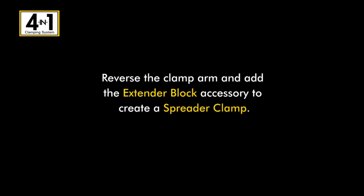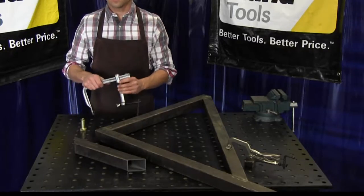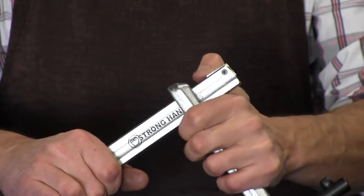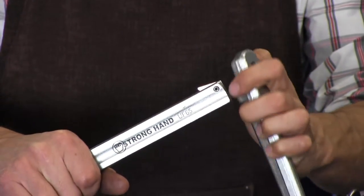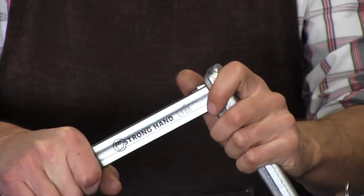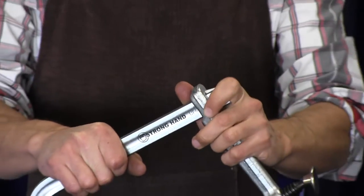My 4-in-1 clamp has a removable, reversible clamp arm. I'm going to slide the clamp arm off the bar by pressing this spring-loaded stop. Now I'm going to turn the arm around and slide it back onto the clamp bar in the reverse position.